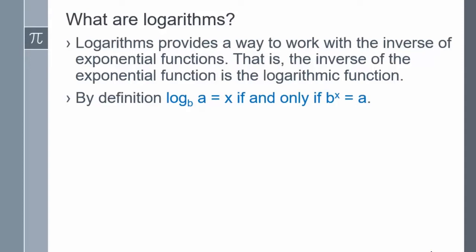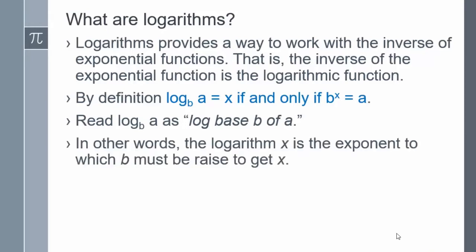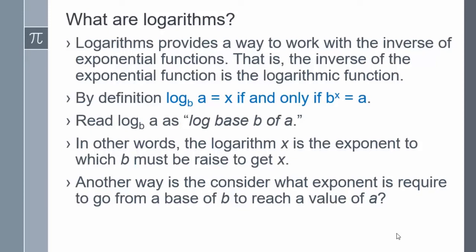By definition, log base b of a is equal to x if and only if b to the x is equal to a. The log is read as "log base b of a." In other words, the logarithm x is the exponent to which b must be raised to get a. Another way to consider this is: what exponent is required to go from a base of b to reach a value of a?